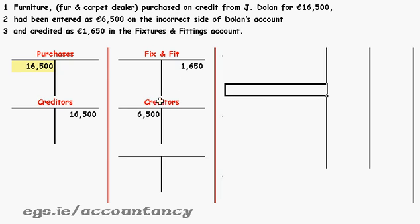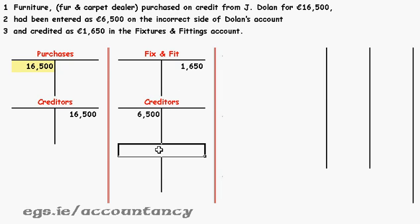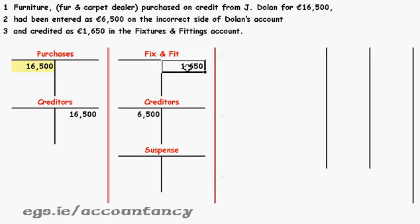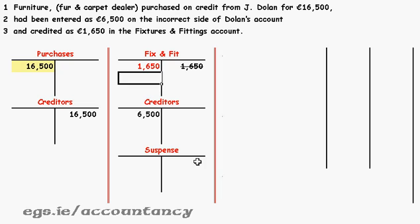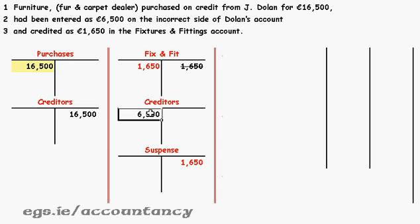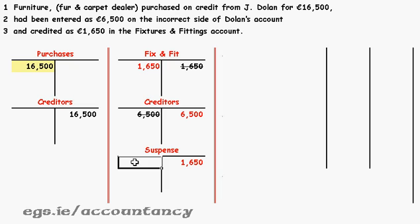We don't have proper double entry here, so we're going to need a suspense account. What we'll do is get rid of both these wrong figures and then write it up properly. First we'll get rid of the 1,650 by putting a 1,650 opposite it, which we'll double entry down to suspense. Then we'll get rid of the 6,500 by putting a 6,500 opposite, which we will double entry down to the suspense.